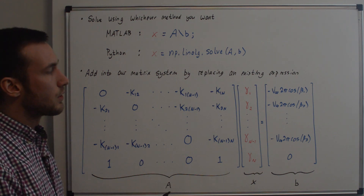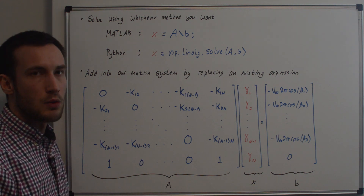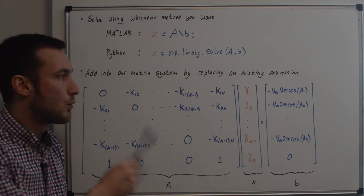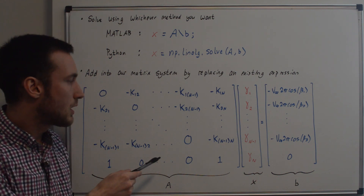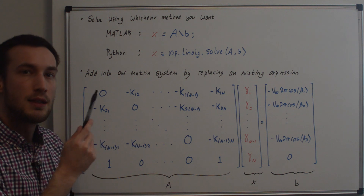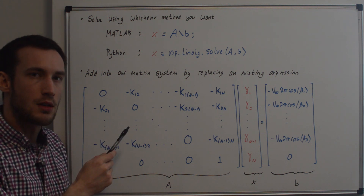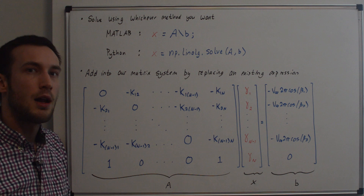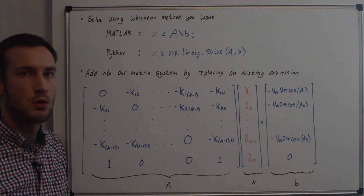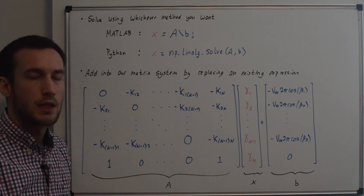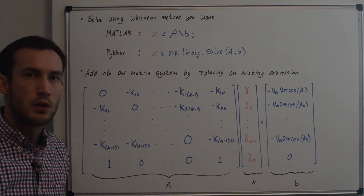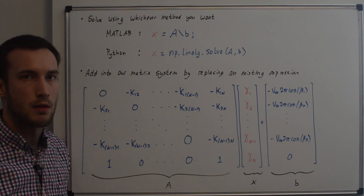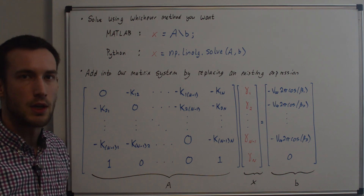That gives you the results for all of the vortex panel strengths. Using these solved vortex panel strengths, we can plug them back into the tangential velocity equation to solve for the tangential velocities on each panel, and thus the pressure coefficient on each panel. My next video will be converting the source panel method airfoil code into a vortex panel method airfoil code. Thanks for watching.